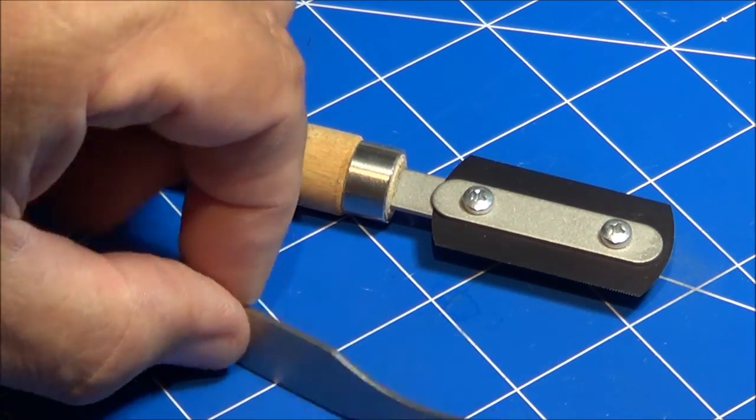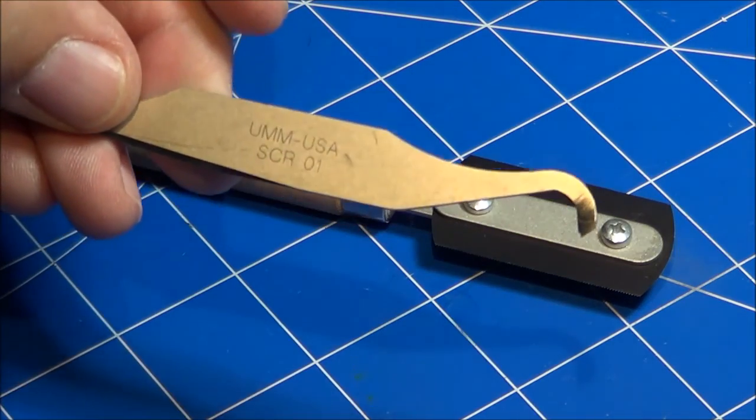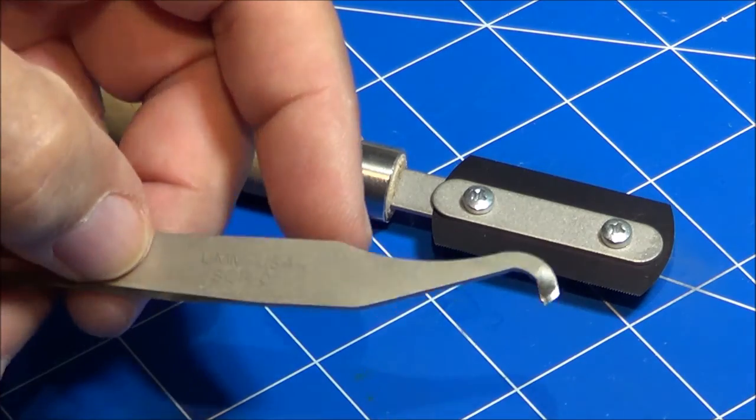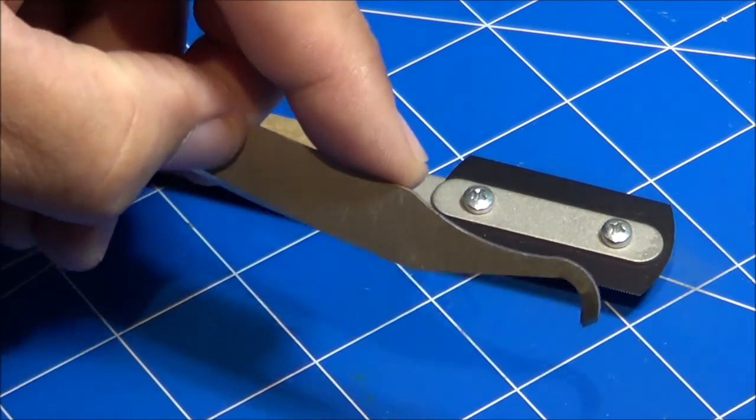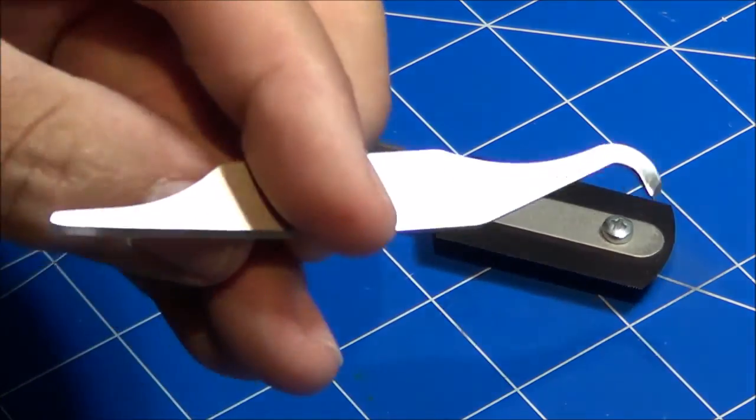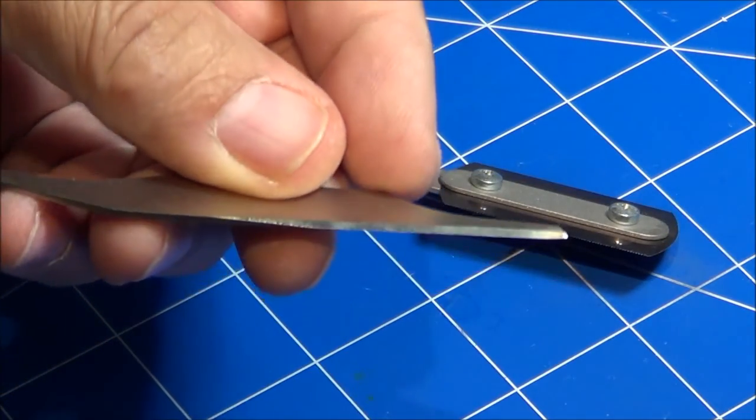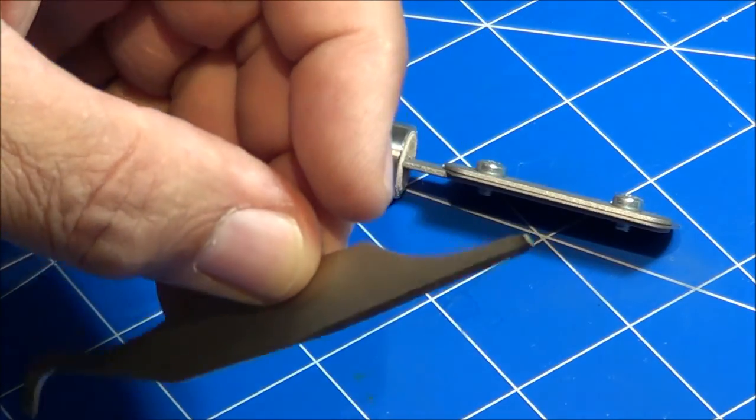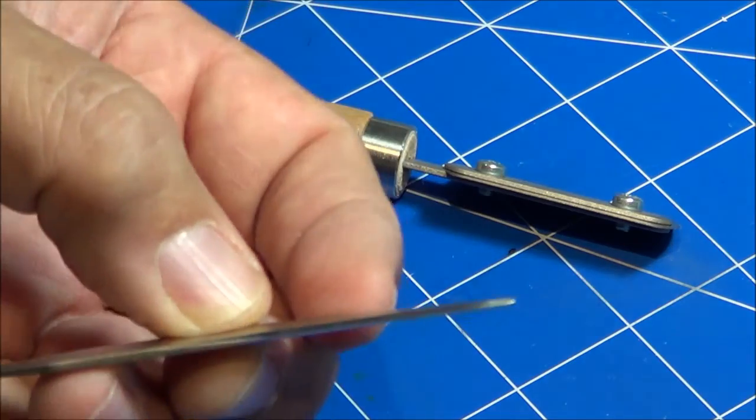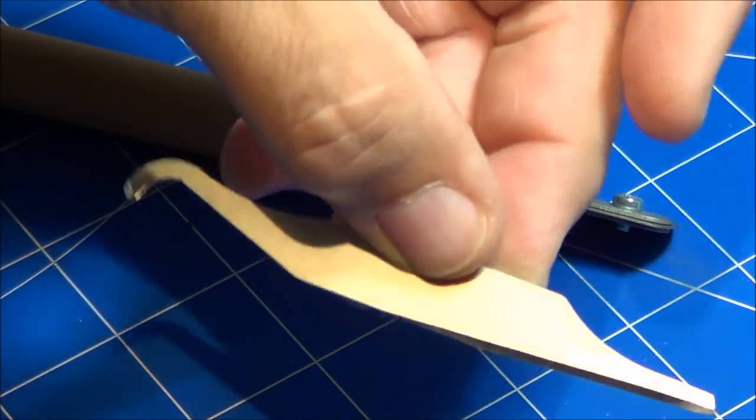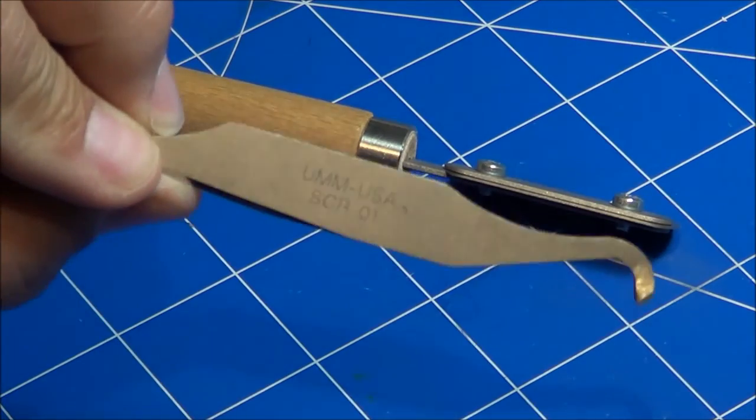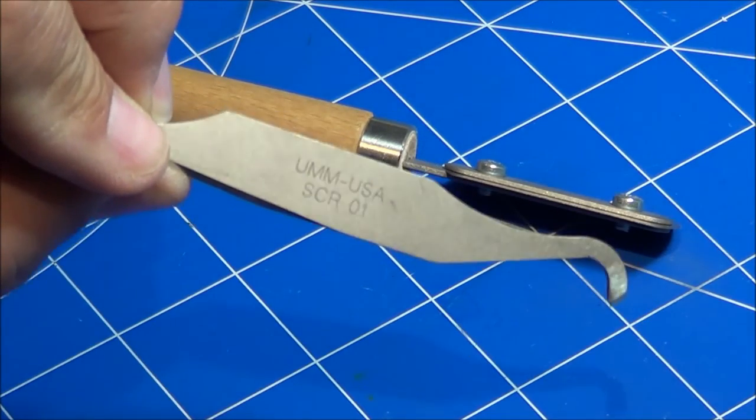Now the other one, which is readily available from UMM USA, is the SCR01 scribing tool. It has an edge that allows you to pull the scribe line or push it. Same thing, you also have a razor sharp side on this edge where you can actually drag it over the top of your fuselage panel lines, over the bottom, and so forth. This is a very common tool out there, a little pricey though from UMM USA.